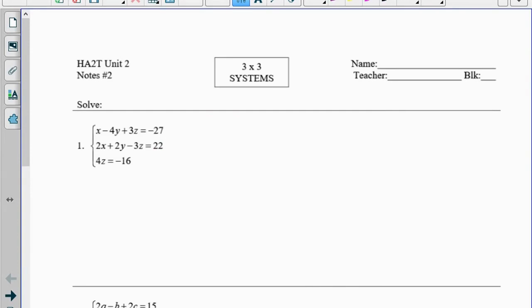These notes are on solving three-by-three systems by hand, so our answers will be in the form of ordered triples, x comma y comma z.